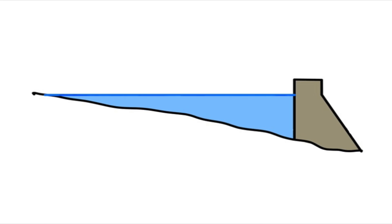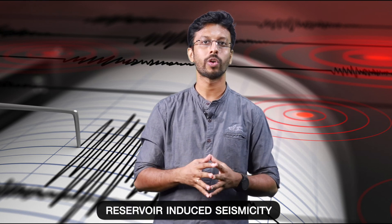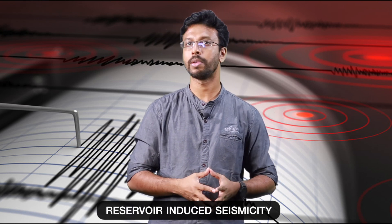Within induced seismicity, one specific human activity that can lead to an earthquake mechanism is the construction of a huge dam. The weight of the water accumulated behind the dam can exert a lot of stress onto the underlying earth surface, which could sometimes trigger an earthquake in that location — which is what we call reservoir-induced seismicity, that is, an earthquake being created by the construction of a huge dam.